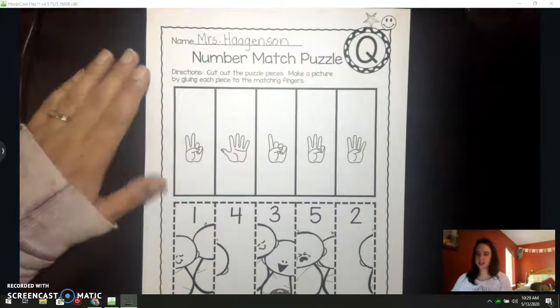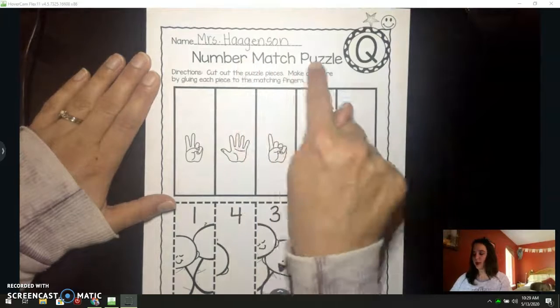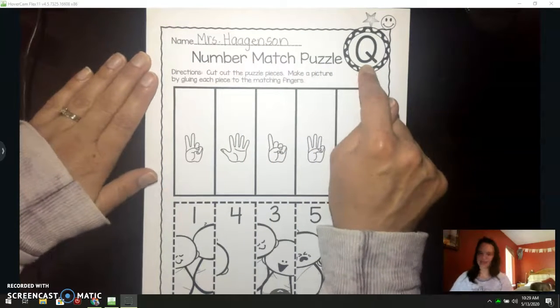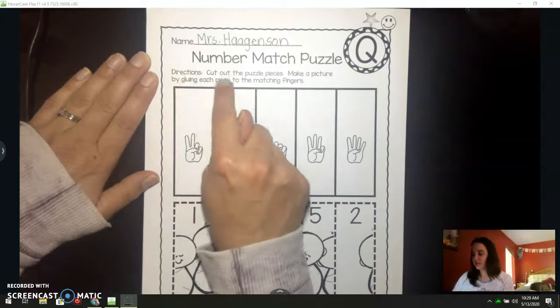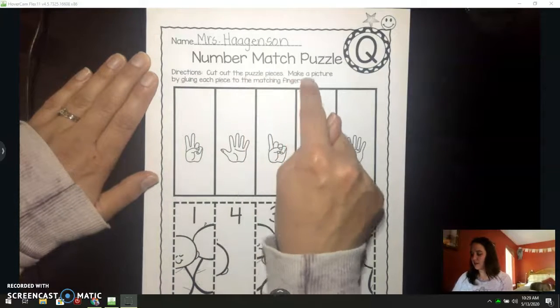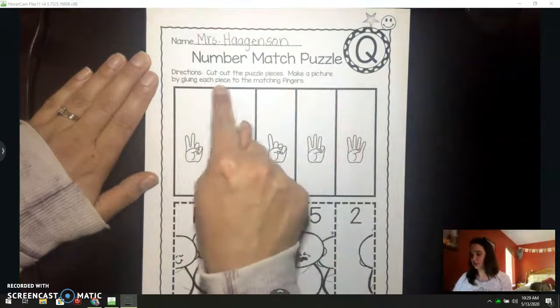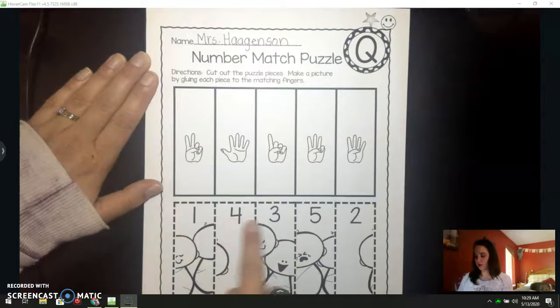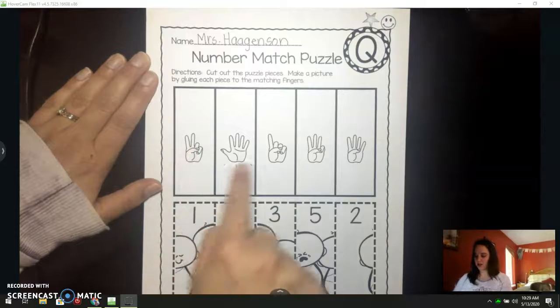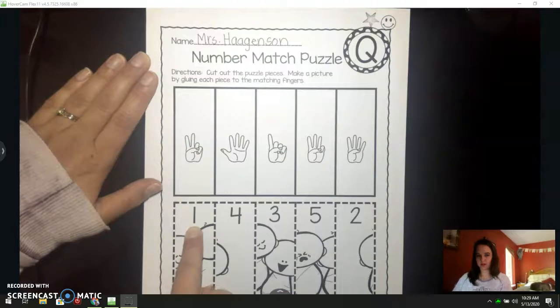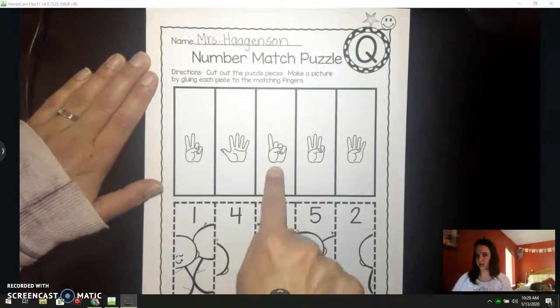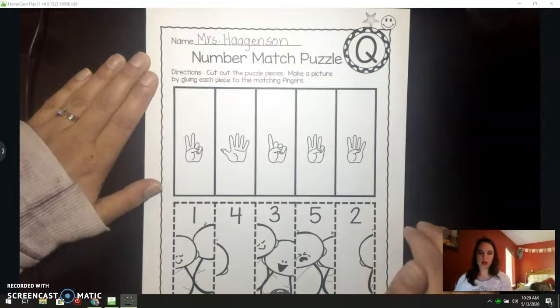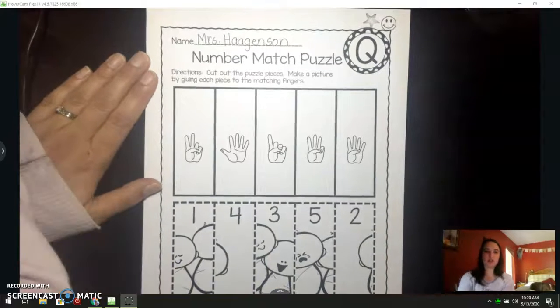My directions say number match puzzle. This is the letter Q. Q says qu. Directions: cut out the puzzle pieces, make a picture by gluing each piece to the matching fingers. Remember, I'm not going to put them in one, two, three, four, five order. I'm going to match the number to the fingers. So this one, one, it's going to go here where there's one finger. I am going to cut my pieces and then I will come back. Push pause so you can cut your pieces too.